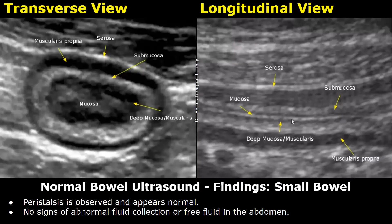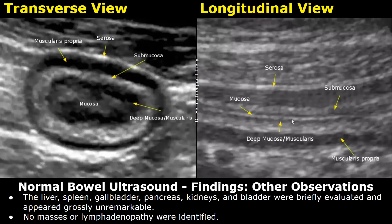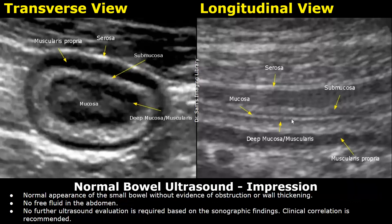No signs of abnormal fluid collection or free fluid in the abdomen. Other observations: the liver, spleen, gallbladder, pancreas, kidneys, and bladder were briefly evaluated and appeared grossly unremarkable. No masses or lymphadenopathy were identified. Impression: normal appearance of the small bowel without evidence of obstruction or bowel thickening. No free fluid in the abdomen. No further ultrasound evaluation is required. Clinical correlation is recommended.